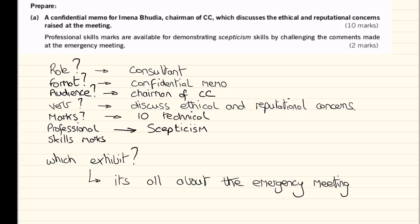Let's have a look at question A. We're asked to produce a confidential memo for Emina Budia, who's the chairman, which discusses the ethical and reputational concerns raised at the meeting. We have 10 marks. Our role is an external consultant, the format is a confidential memo, and we're talking to the chairman. The verb is 'discuss' — ethical and reputational concerns. There are 10 technical marks and professional skills marks are awarded for scepticism. We need to have that in mind when developing our answer. Thinking about time: 10 marks times 2.5 gives us 25 minutes, and I write down my start and finish time.